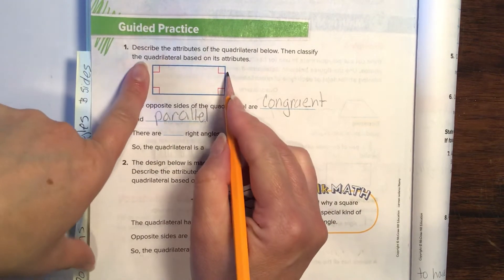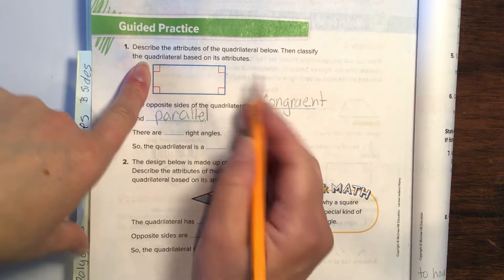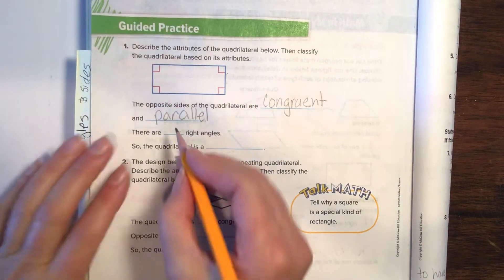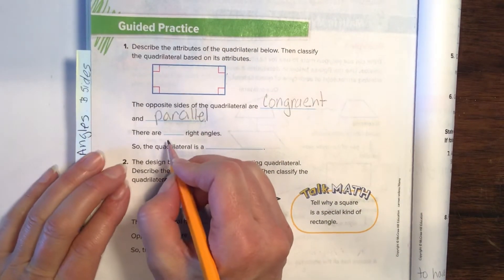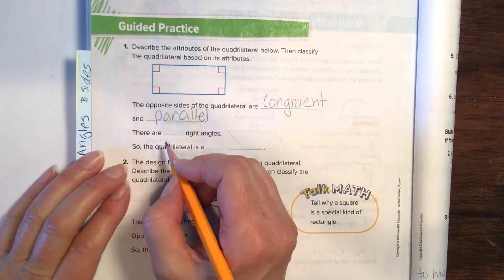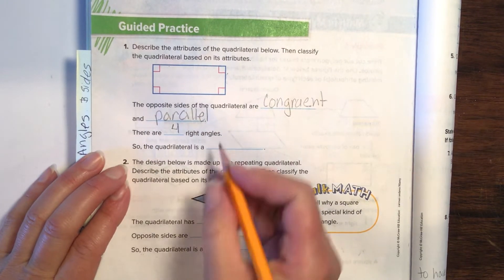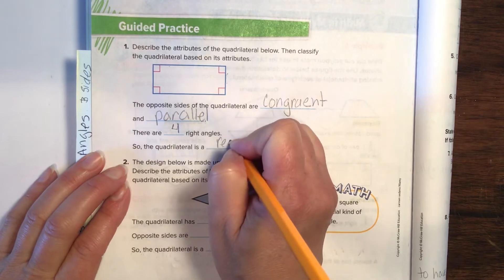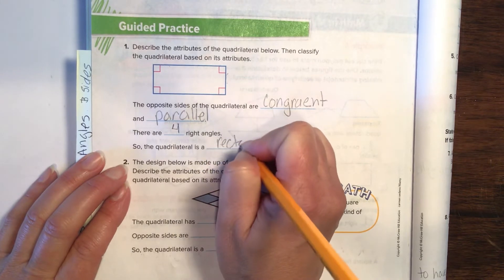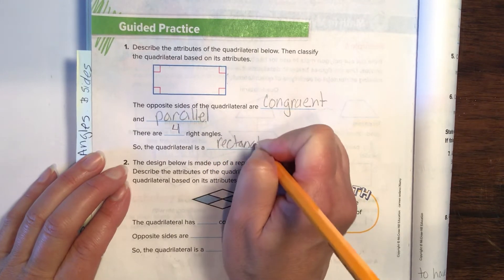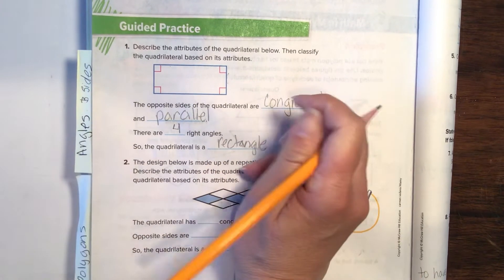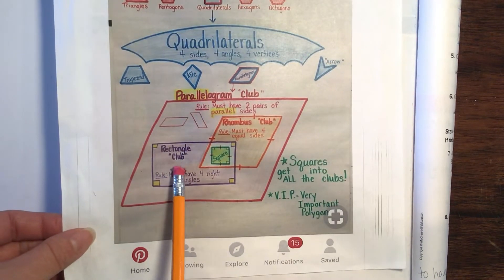Parallel means they're like train tracks. These ones are parallel, and then these ones are parallel. And how many right angles do you guys count? Good job. So this quadrilateral is a rectangle. See, right there — rectangle.